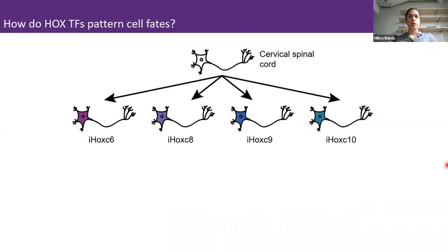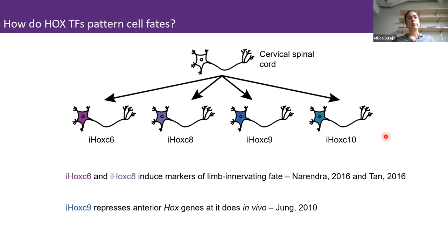In addition, we generated inducible transgenic Hox lines where we can overexpress a single Hox protein under the same cellular and chromatin landscapes. Importantly, we knew these cell lines recapitulate some of the known in vivo phenotypes. For example, the inducible Hox 6 and 8 lines induce markers of limb innervation as expected, and the inducible thoracic Hox 9 line represses a slew of anterior Hox genes as it does in vivo.